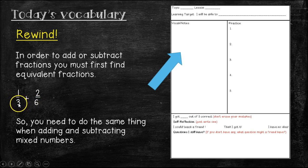Remember, whatever we do to the denominator, we also have to do to the numerator. So in this case, in order to make this a six, we have to think, what did we do to the three to make a six? Well, we multiplied it by two, so we have to do the same thing to the numerator. So now, instead of adding one third plus two sixths, we're adding two sixths plus two sixths.